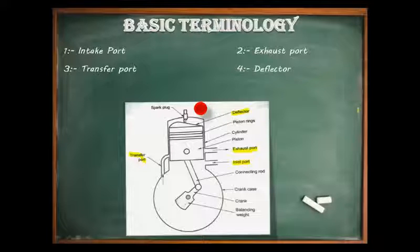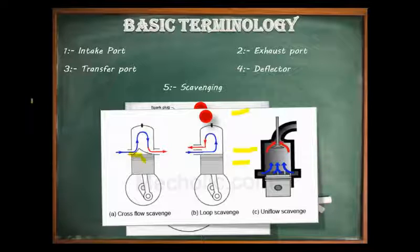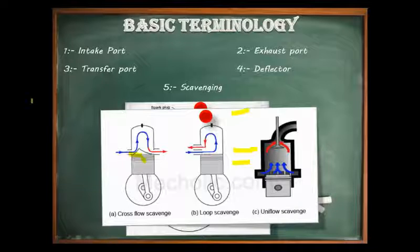Next is scavenging. Scavenging is the process of clearing or sweeping out the exhaust gases from the combustion chamber of the cylinder. It is necessary that cylinders should not have any burnt gases because they mix with the fresh incoming charge and reduce its strength. Power will be lost if the fresh charge is diluted by the exhaust gases. Scavenging is necessary only in two-stroke engines since the piston does not help in clearing the burnt gases from the cylinder.